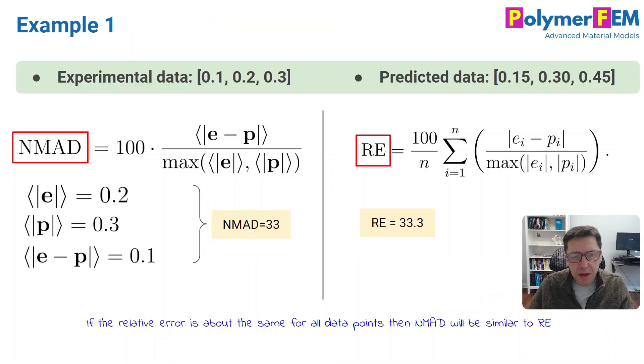I'm going to talk about this in three examples. In my first example, the experimental data points are 0.1, 0.2, and 0.3, and the predicted data is about 50 percent higher. You would think that the NMAD and RE values will be 50, but that's not the case because you divide by the maximum of the experimental and the predicted. So it will be slightly lower, maybe 33, and both NMAD and RE will give you basically the same fitness value. These are equal in magnitude.